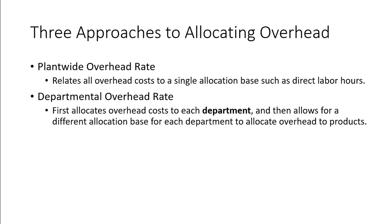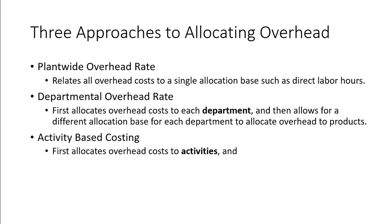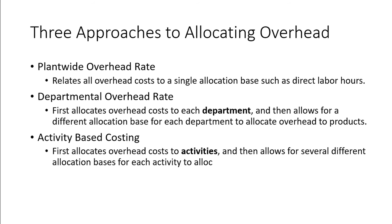The third method is Activity-Based Costing, which first allocates costs to activities and then allows for several different allocation bases for each activity to allocate overhead costs to products. You might have three different activities per department, totaling six, nine, or even more than ten overhead rates. The key thing to remember is the number of overhead rates used for each method: only one for the plant-wide method, one per department — usually totaling two or three — for the departmental method, and as many as necessary for the activity-based cost method.